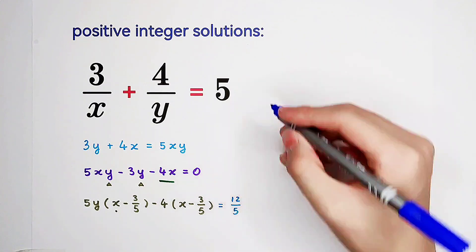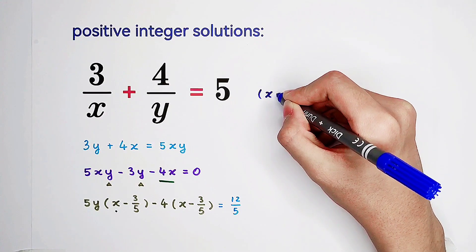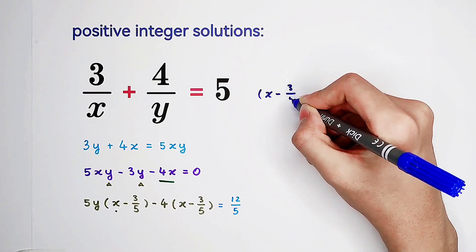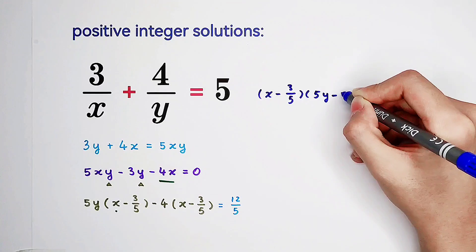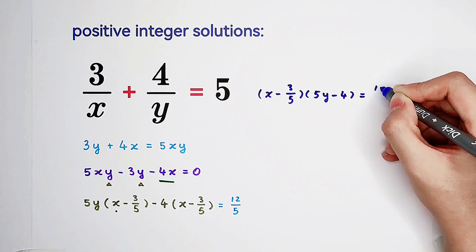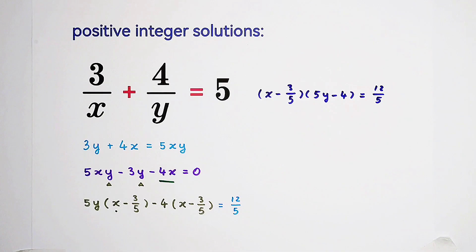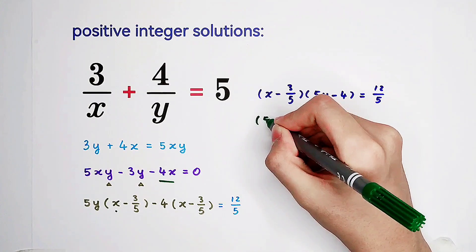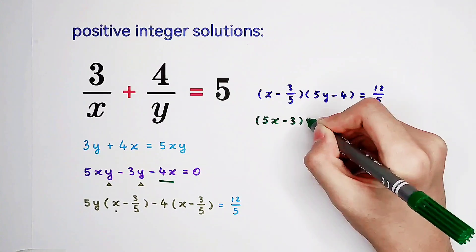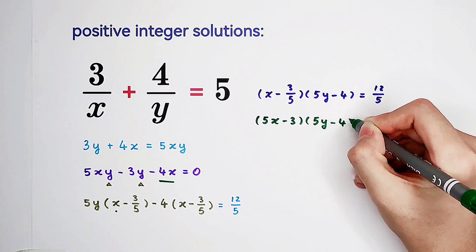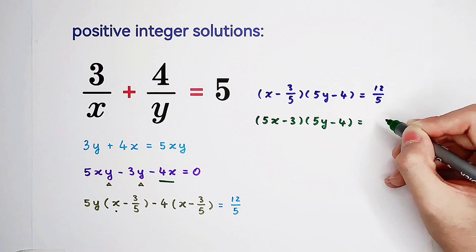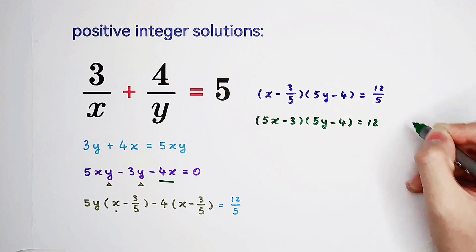Now, take out this happily. x minus 3 over 5 times 5y minus 4 equals this one. Oh, fraction. I hate fraction. Here is 5. Here is 5. So we can multiply both sides by 5. And, it is 5x minus 3 times 5y minus 4 equals 12.